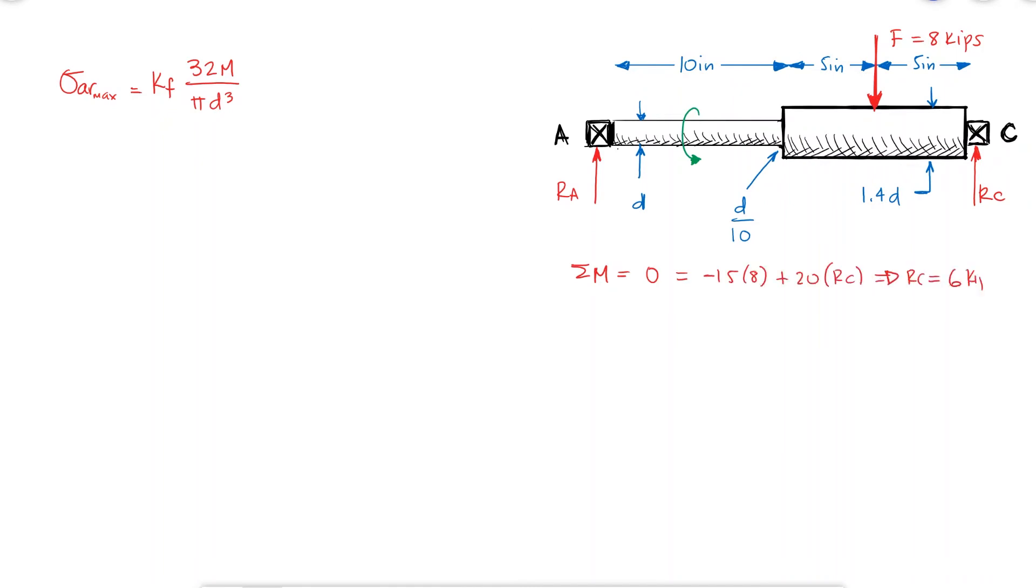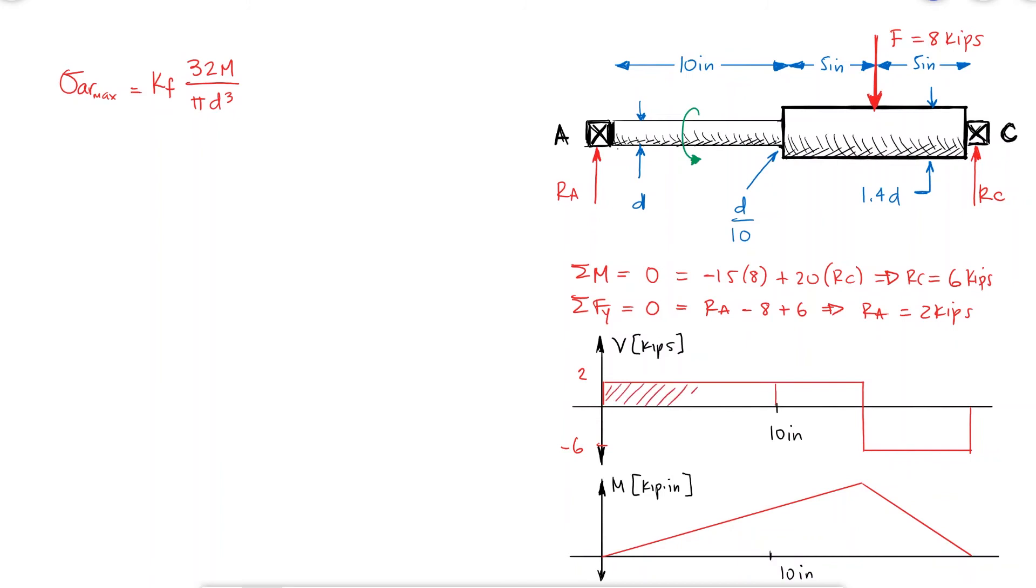A quick free body diagram, shear diagram, and bending moment diagram will reveal that the moment at the notch is 20 kip inches.